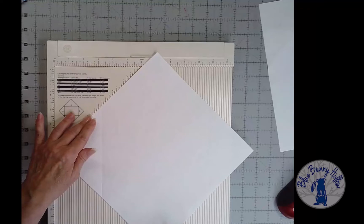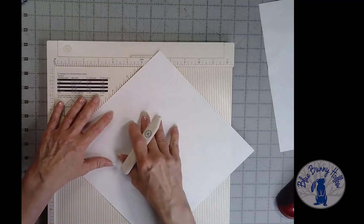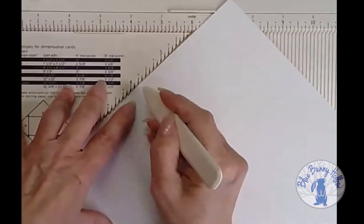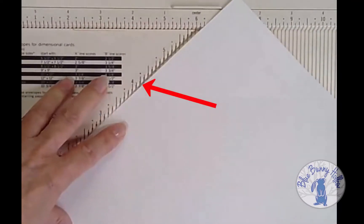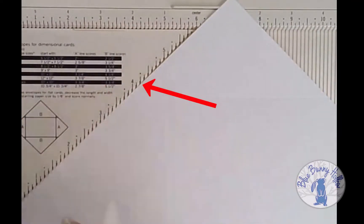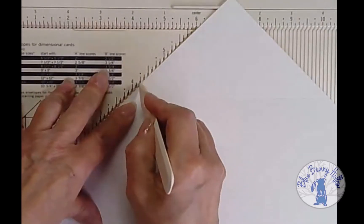Repeat for the opposite corner. For the large triangles, the guide says to use four and a quarter inches. Find four and a quarter inches on the envelope guide and run the bone folder straight down the indented line. Repeat for the opposite side.